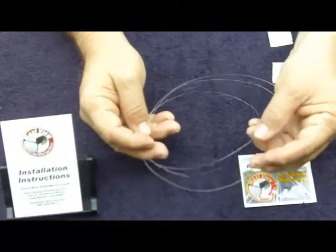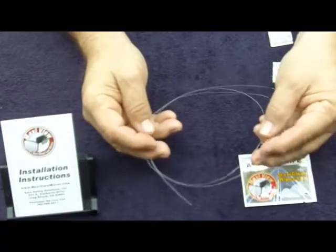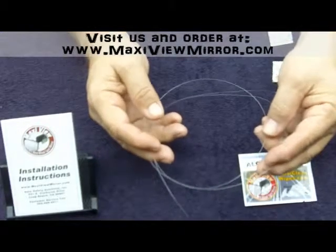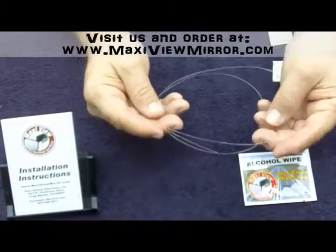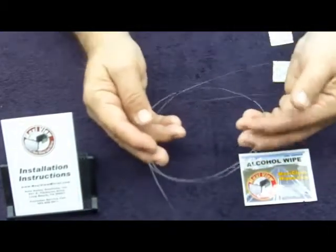This is a 50-pound test nylon fishing line, which is what's required if your MaxiView has been on the car more than three months. Less than three months, you can use pretty much any weight fishing line.